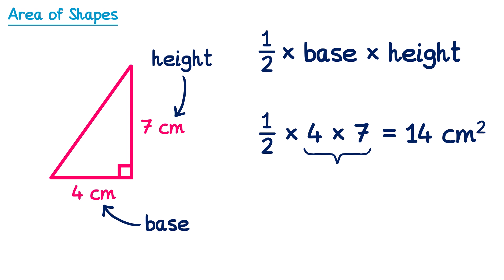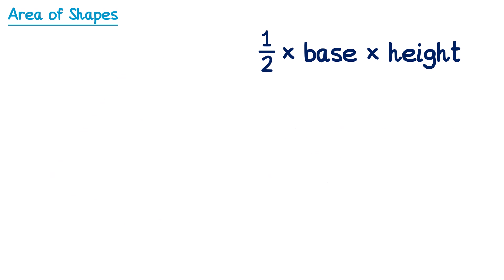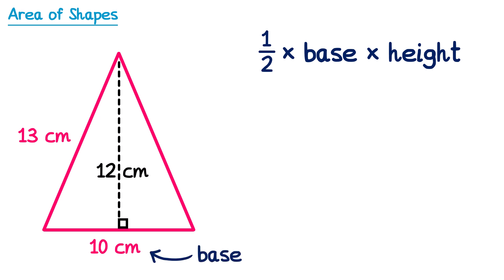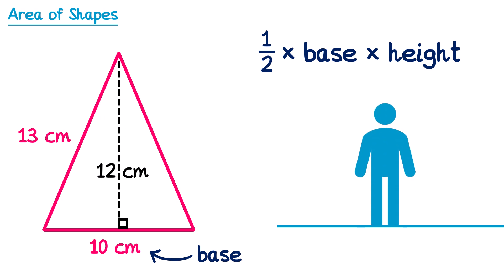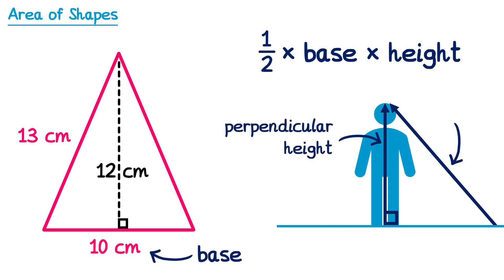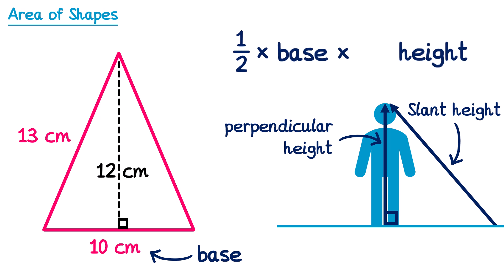Let's look at another example. The base is clearly 10, but the height is not so obvious — we have two numbers here, a 13 and a 12. So which one would we choose? If you were asked to measure the height of a person, you'd start right down at their feet and measure straight up vertically to the top of their head. What's key is that this height, which goes vertically, forms a right angle with the ground. When two lines form a right angle, we say they're perpendicular, so we call this the perpendicular height. The height over here is still considered a height, but it's not useful for the area of a triangle — we call this the slant height, and we won't need it in this formula. So we need to update the formula: it should be one half multiplied by the base multiplied by the perpendicular height.